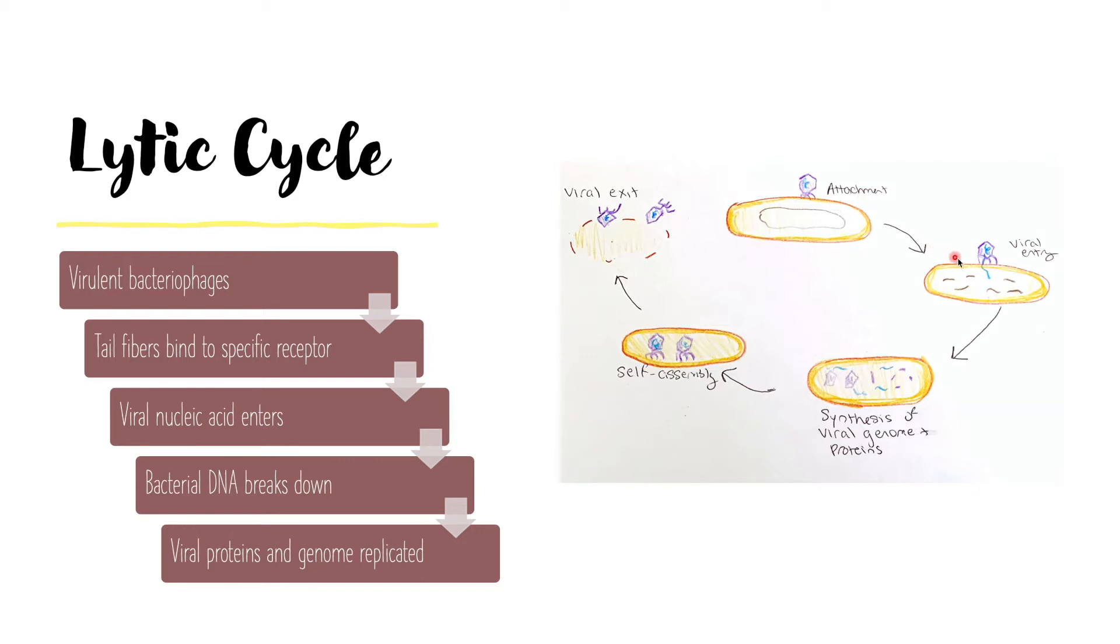Next, the tail fibers bend almost like they are squatting and the viral genome is injected into the host cell. The bacterial DNA is then disintegrated. The virus uses the bacterial DNA and enzymes to reproduce its own genome and viral proteins through the processes of transcription and translation.